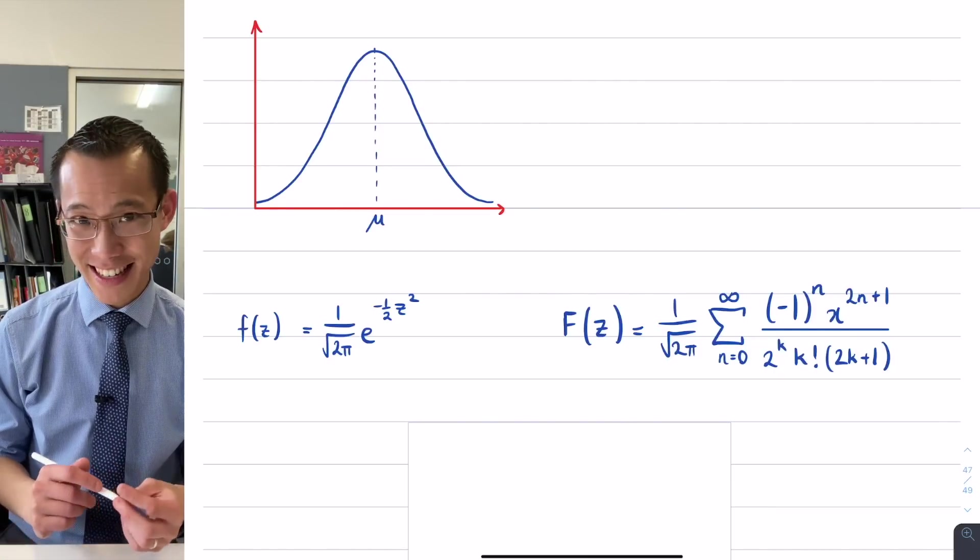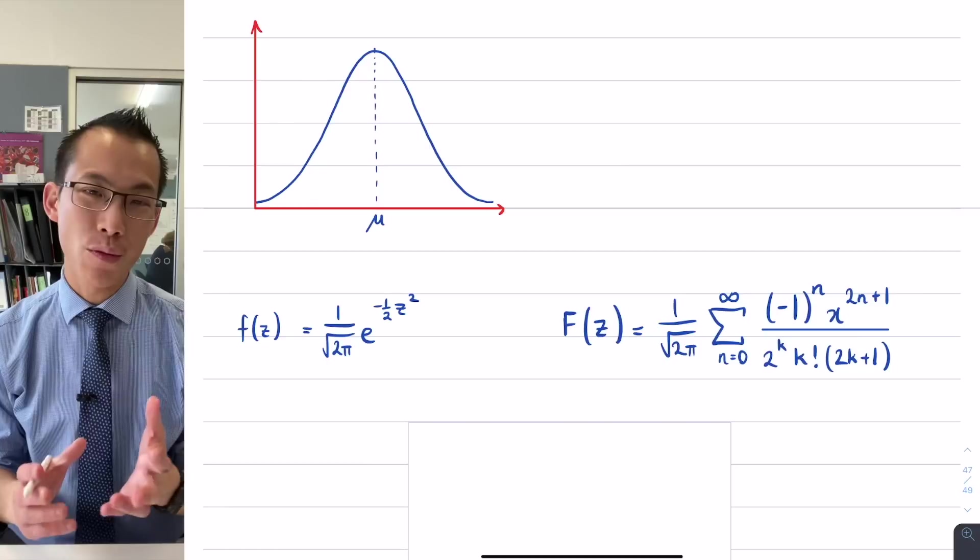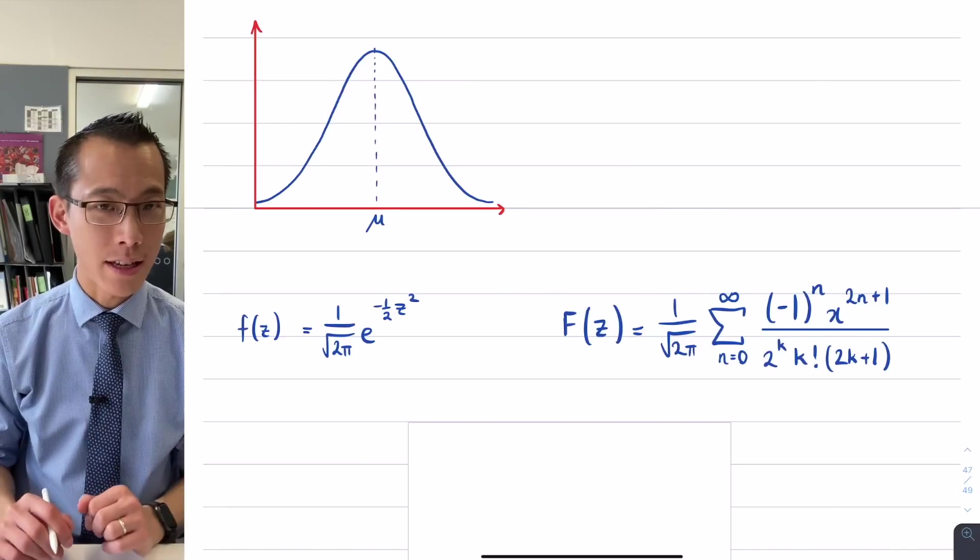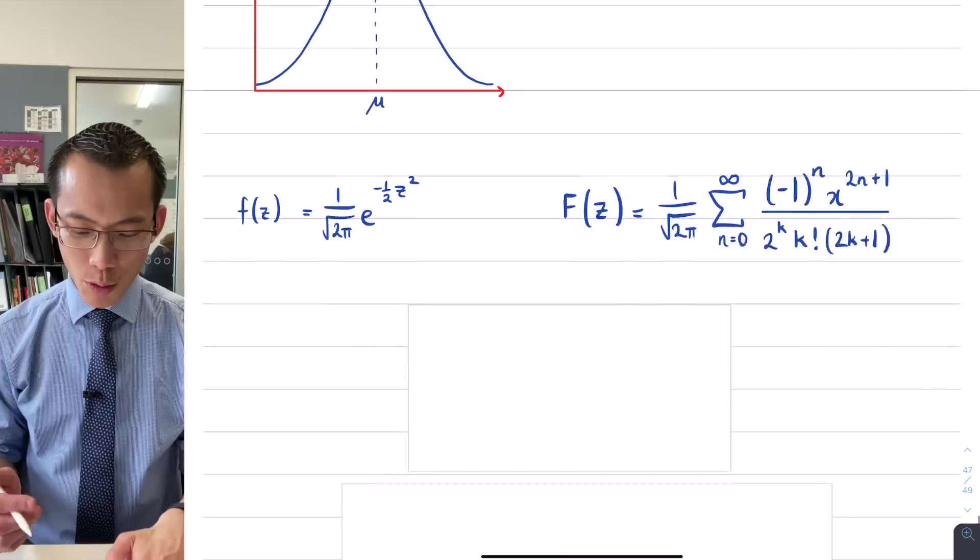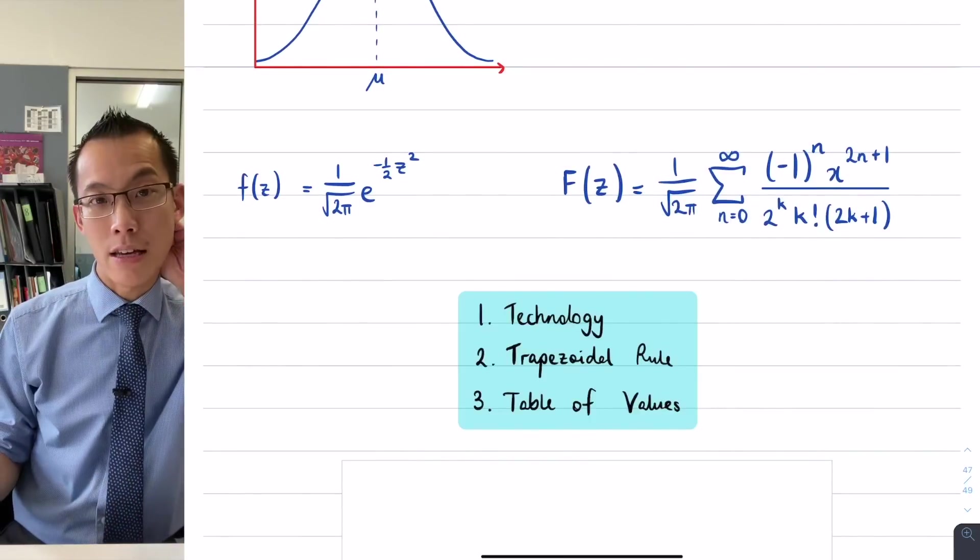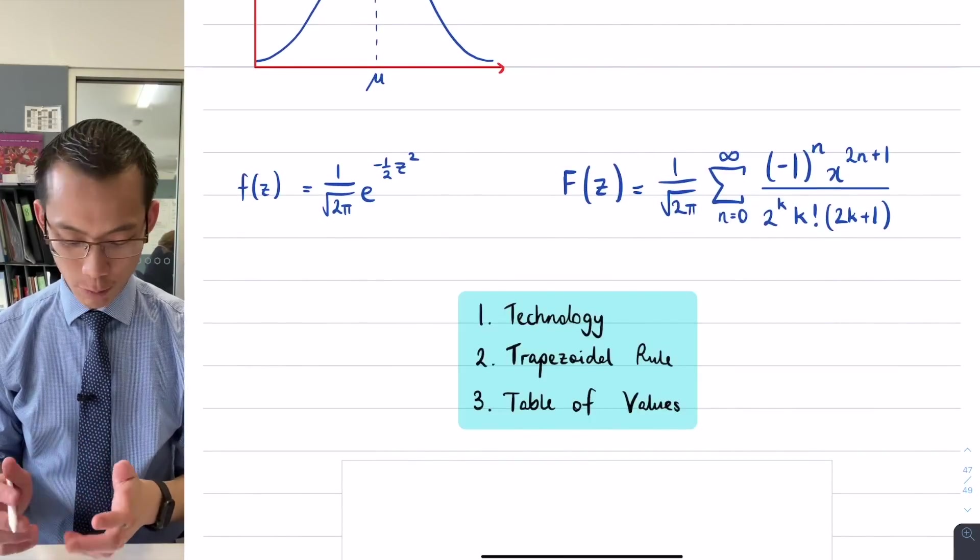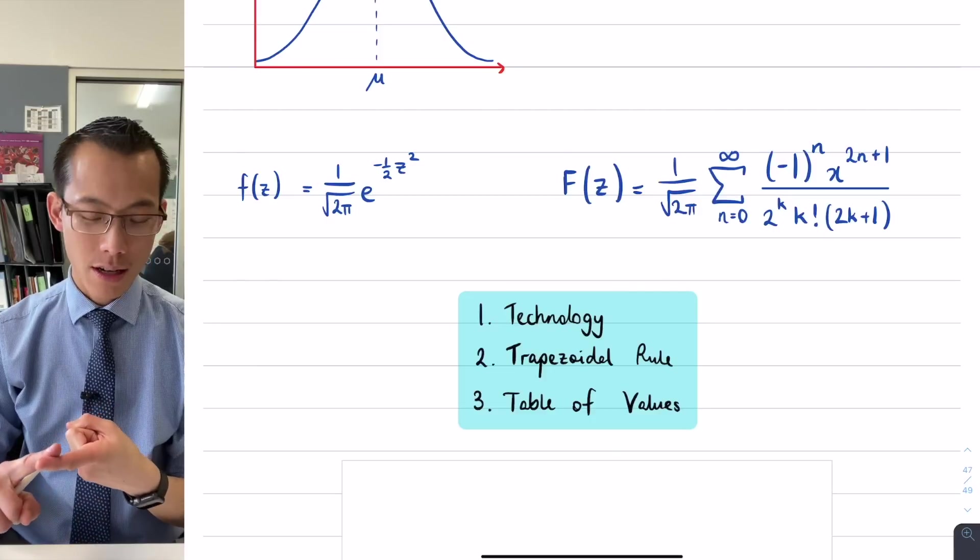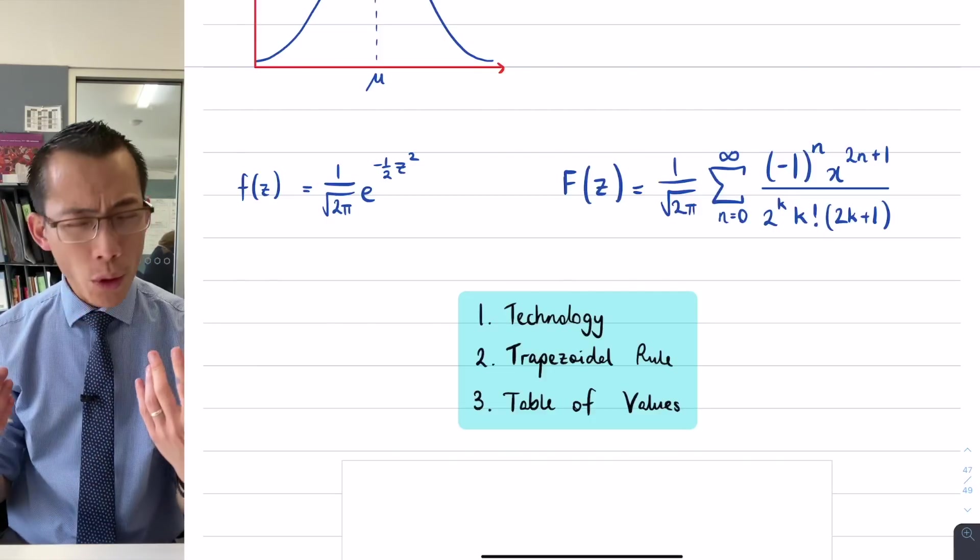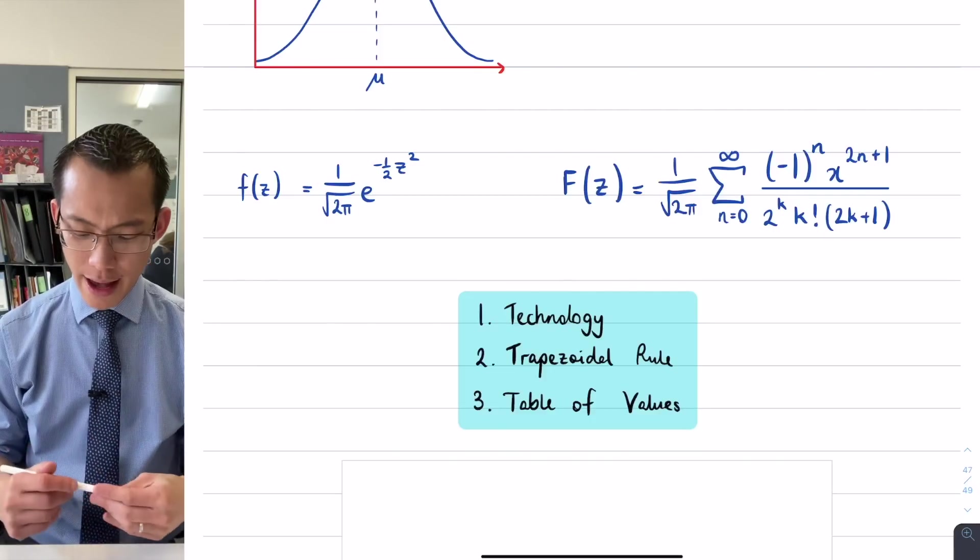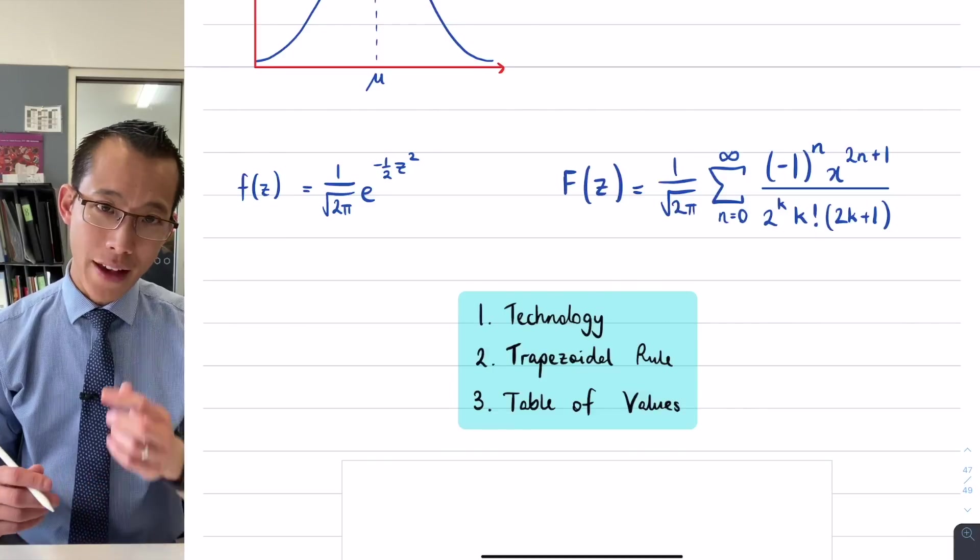It's pretty intense to say the least, so we want to do everything we can to avoid having to integrate this particularly manually. We decided that there were basically three main strategies that we could use to deal with this particular function: we could either use technology to evaluate the integral directly, or use the trapezoidal rule to get an approximation, and the same deal with a table of values.